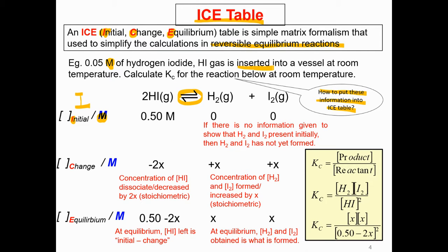It is inserted into a vessel, so 0.05 molar of hydrogen iodide is the initial concentration. The question never mentions the concentration for hydrogen and iodine, meaning there is no product formed yet. Hydrogen iodide is the reactant; hydrogen and iodine are the products. If there is no mention, those products are not formed yet, so we put 0.